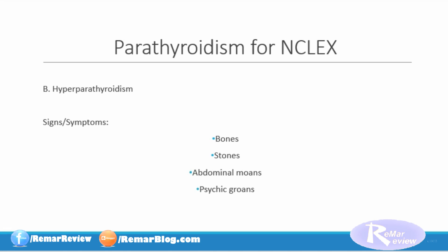The signs and symptoms are bones, stones, abdominal moans, and psychic groans. That's a fun way to remember it, but what does all that mean? If we focus on our bones, our patient will have some osteoporosis. Stones mean renal calculi. Abdominal moans are the GI symptoms because the intestines are absorbing extra calcium, so it's going to cause some abdominal pain in our patients. And the psychic groans are symptoms of depression and psychosis that can occur when a patient has a high calcium level.